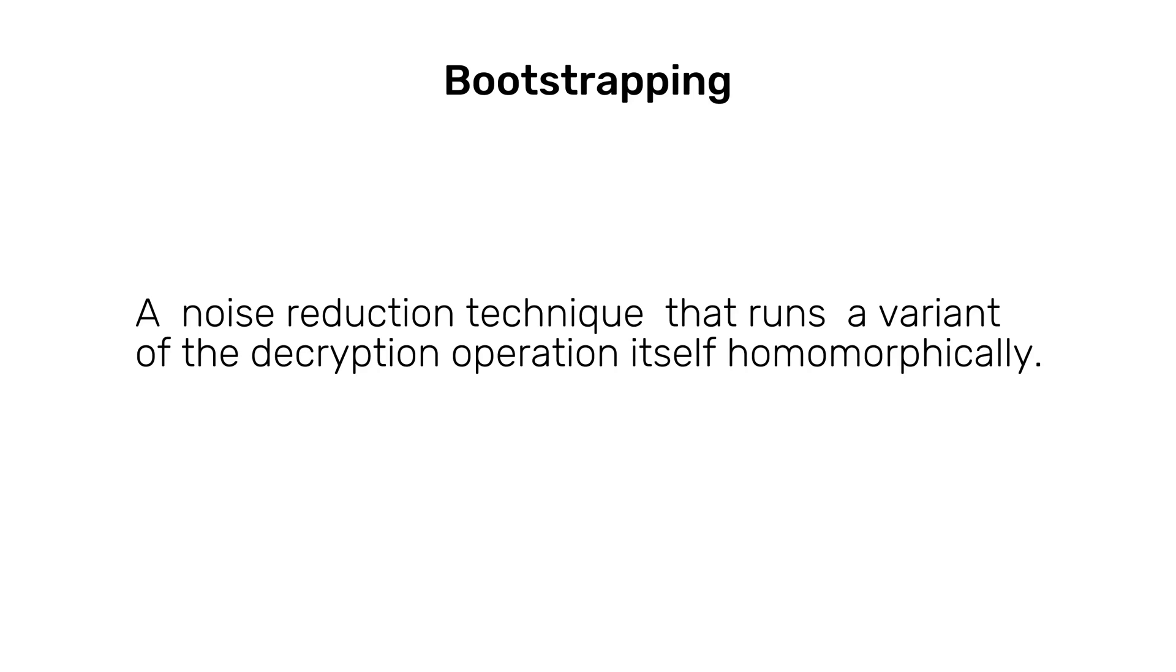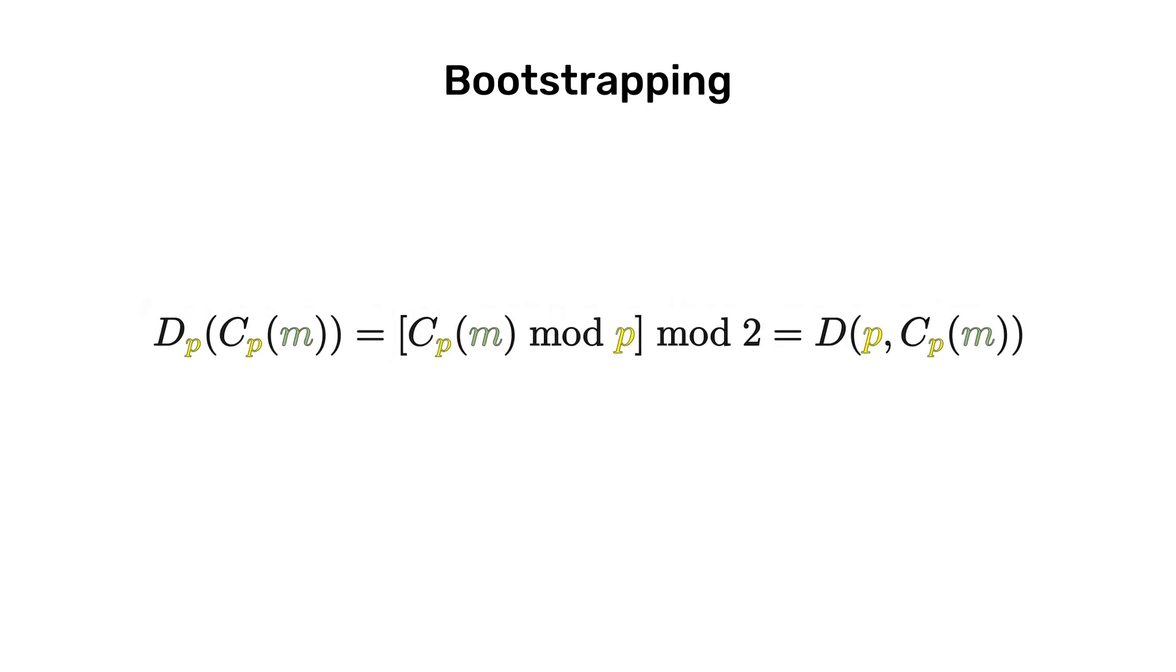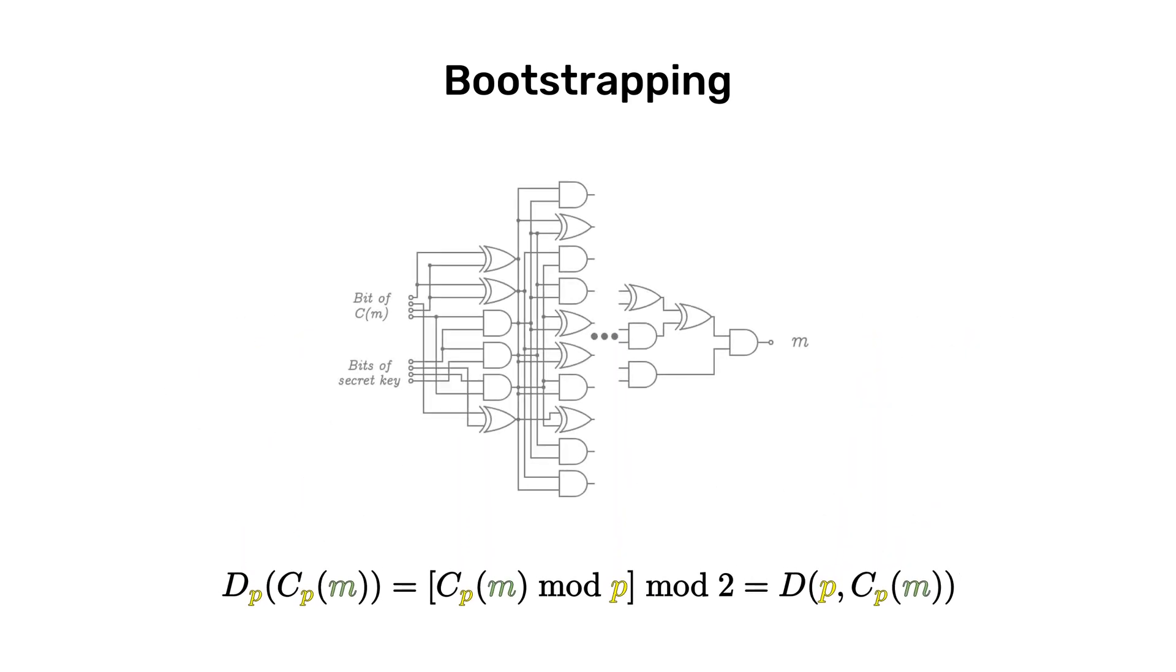So is there a way to decrease the error? Yes, bootstrapping, a technique that involves running the decryption procedure homomorphically without revealing the message and using an encrypted version of the secret key. To give a sense of how this is possible, we should keep in mind that we can produce a series of additions and multiplications that perform the decryption operation, in our scheme, modulo p followed by modulo 2.